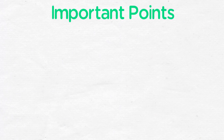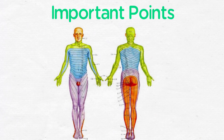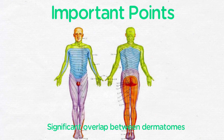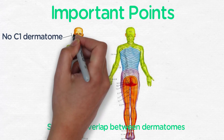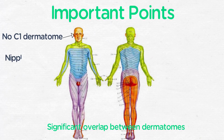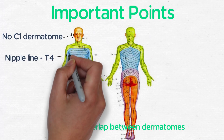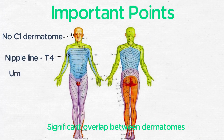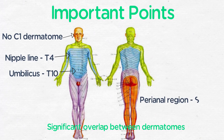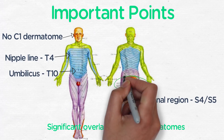There are several important points about the dermatomes. Number one is that there is significant overlap between the dermatomes. There is no C1 dermatome. The nipple line corresponds to about the level of T4. The level of the umbilicus corresponds to the level of T10, and the perianal region corresponds to the S4, S5 dermatomes.